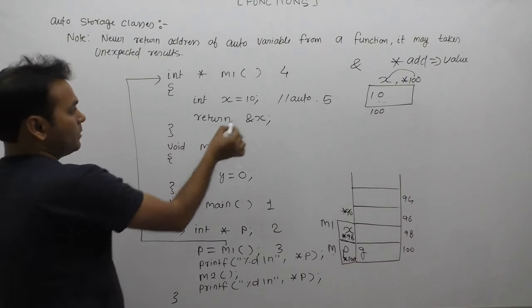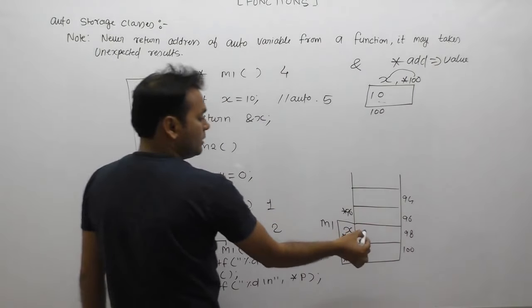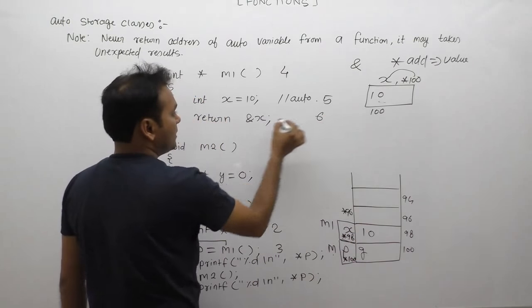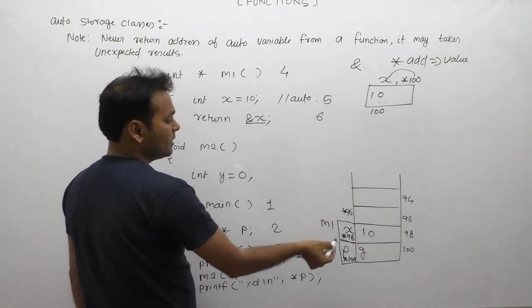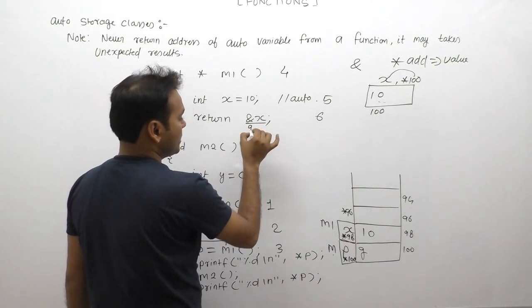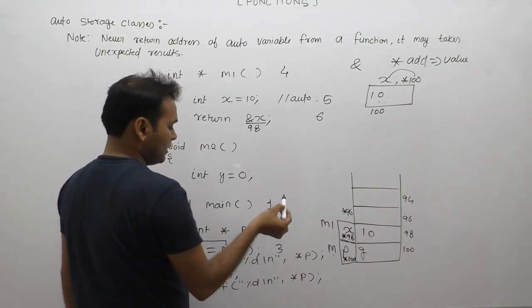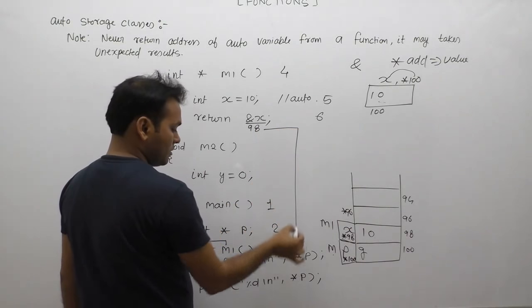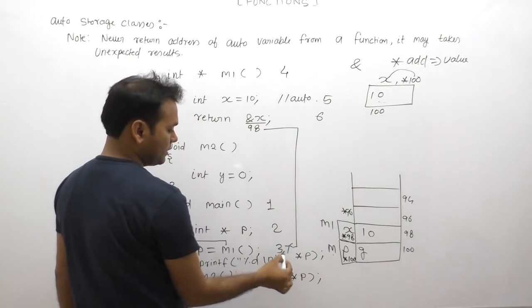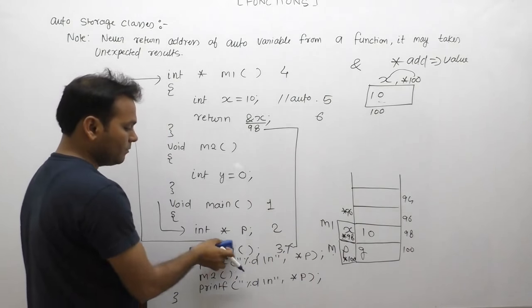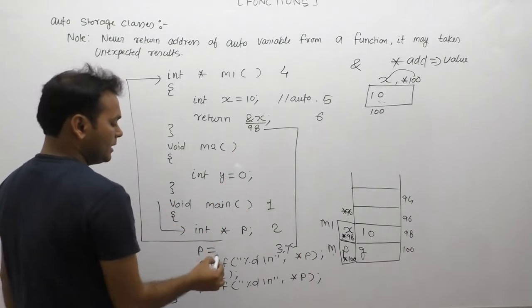Next, x value is assigned as 10. After that, sixth case: return ampersand x. Ampersand x means 98. This value is sent to the calling place.